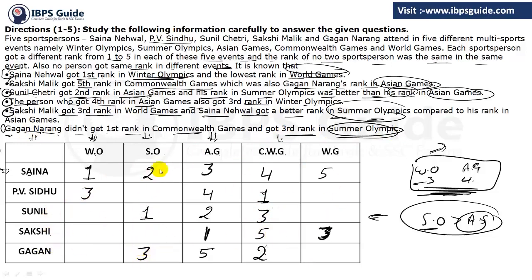Now we just have to solve the rest of the Sudoku. Looking at Summer Olympics, we have 2, 1, and 3. We need 5 and 4. Rank 4 can't go in one row because 4 is already there, and 5 can't go in another row because 5 is already there. So we interchange them — 5 goes in one cell and 4 in the other.